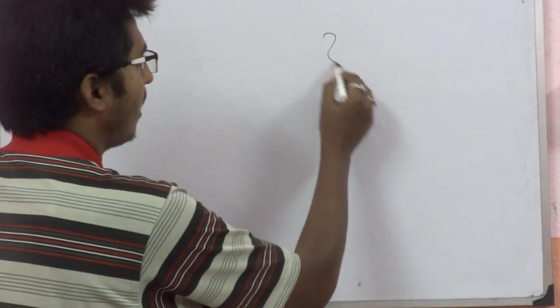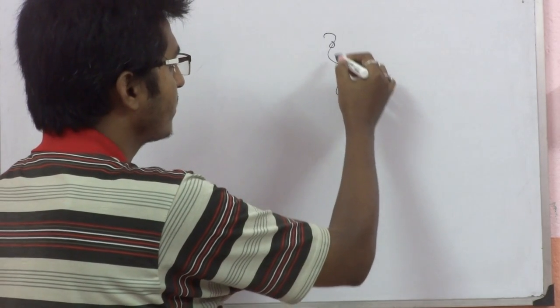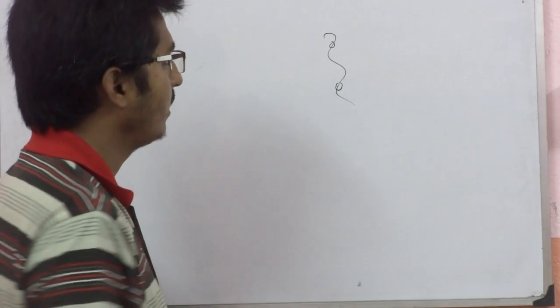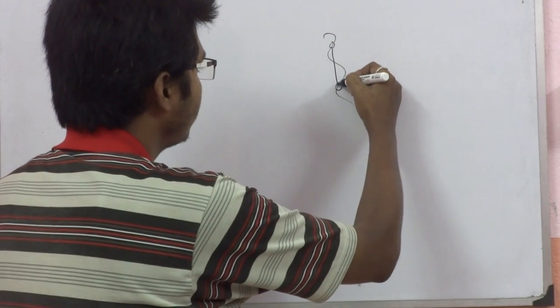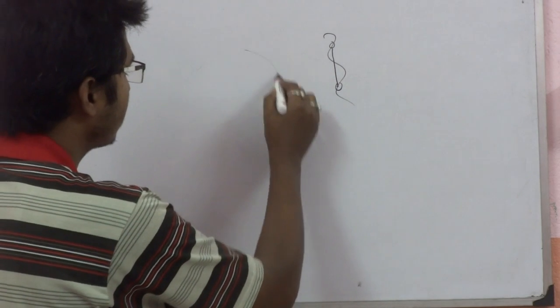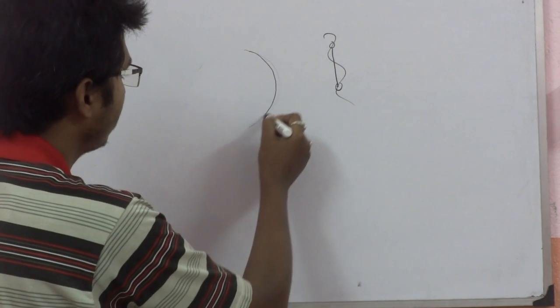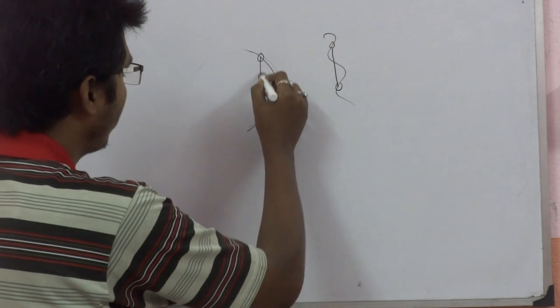Suppose this is a curve. Consider these two points. If you join these two points, this is called chord. Similarly, consider this curve, consider these two points, join this.